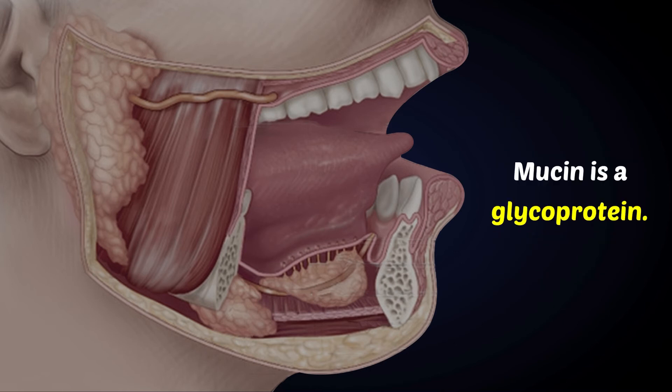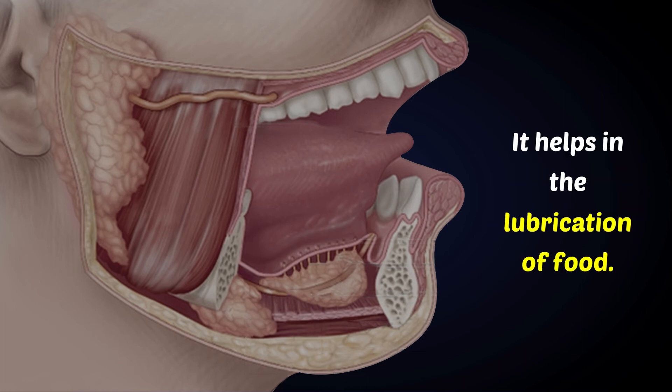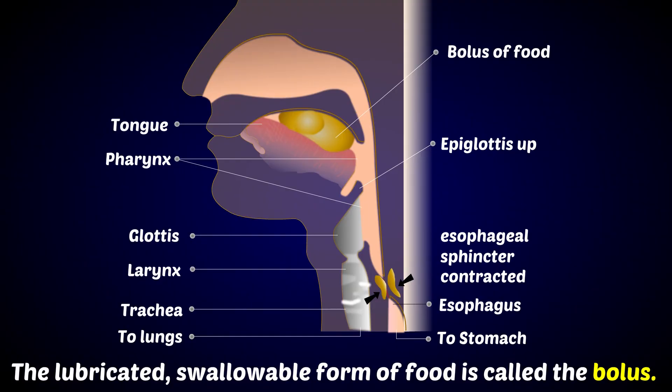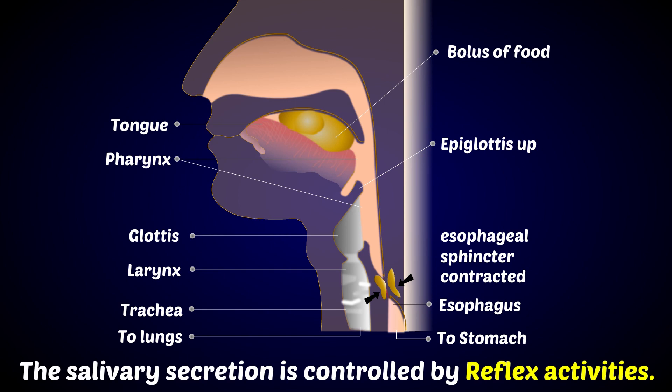Mucin is a glycoprotein. It helps in the lubrication of food. The lubricated, swallowable form of food is called the bolus. The salivary secretion is controlled by reflex activities.